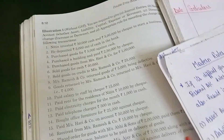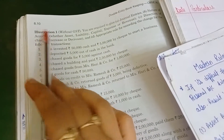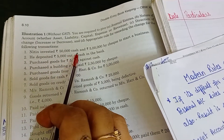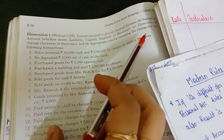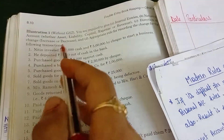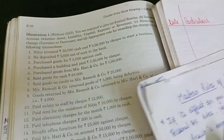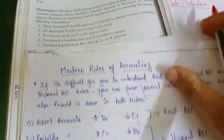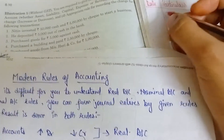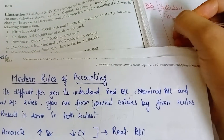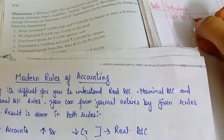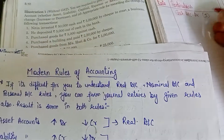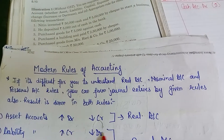We will see journal entries by doing questions from T.S. Grewal, chapter number eight. The first transaction is: Nitin invested 50 lakh cash and 5 lakh by cheque to start a business. After seeing this transaction, we come to know that our cash has increased. Cash is an asset, so cash has increased — we will debit cash. In the journal entry we will write: Cash Account Debit.